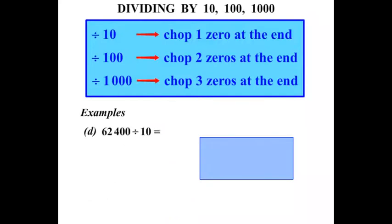The next one: 62,400 divided by 10. So let's start with writing the number down. Dividing by 10. So we need to chop one zero off. Let's cross it out. So we're left with 6240.